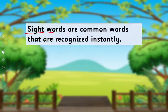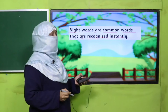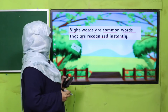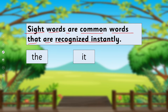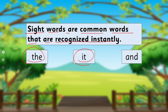Sight words are common words that are recognized instantly. You look at the word and you find out what the word is. For example: 'the,' 'it,' 'and,' 'so.' How can you read these so quickly?